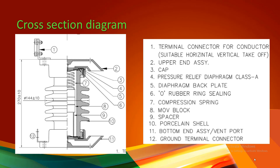There is a pressure relief diaphragm — class A or class B. When the pressure increases inside the surge arrester, the diaphragm releases that pressure. The diaphragm has a pin-type arrangement; when pressure increases, the pin-type structure breaks and releases the pressure.